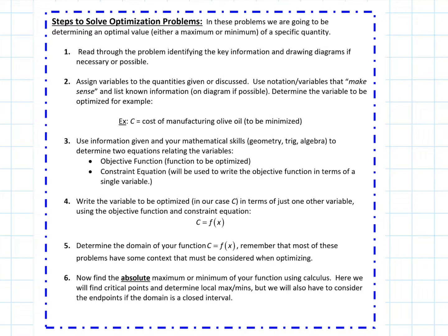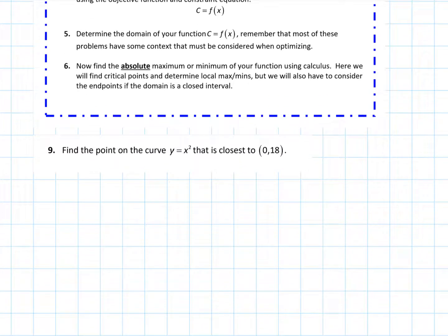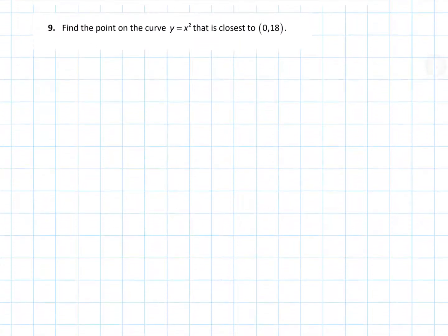Let's take a look at another optimization problem. Projected here on the screen are the steps to optimization, and now that we've done several optimization problems these steps should be pretty familiar. But the ultimate goal is to read through the problem and figure out what our objective function, the function we're trying to actually optimize, should be based on constraints and everything else.